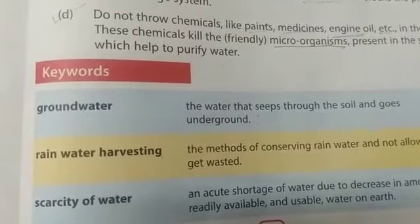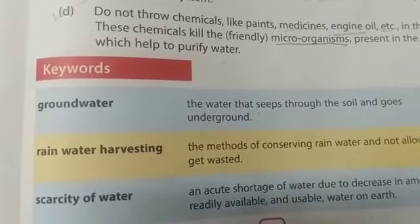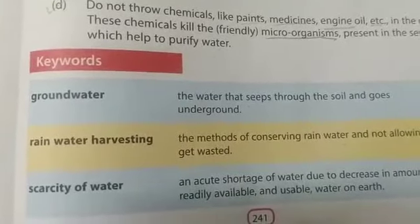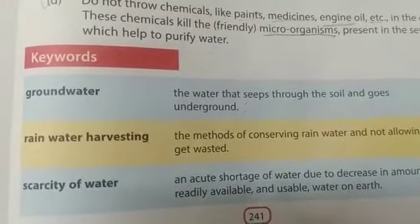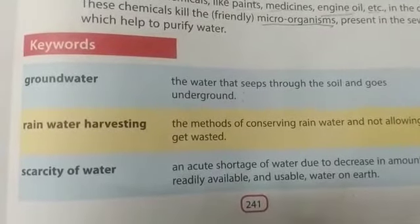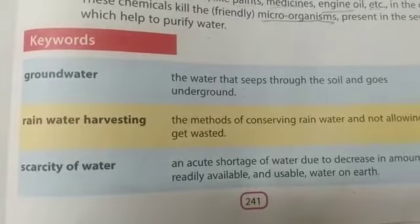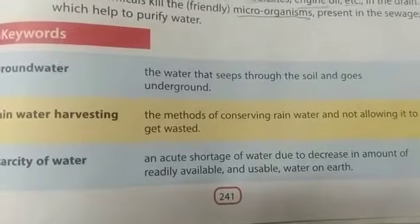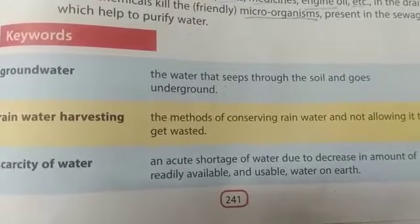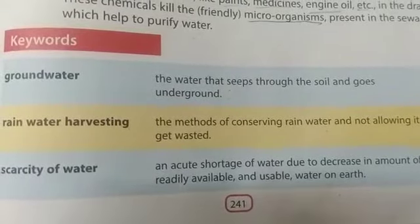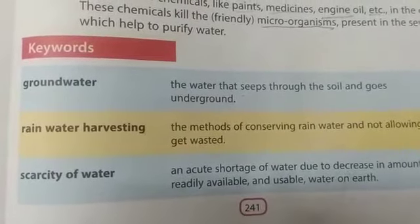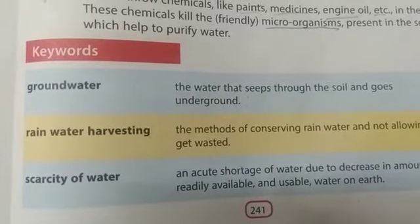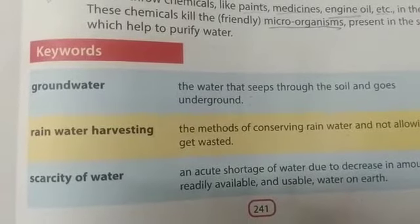After that, rain water harvesting. Rain water harvesting refers to collecting and storing rainwater. Next, scarcity of water: an acute shortage of water due to a decrease in the amount of readily available and usable water on earth. We know that 97% of water is present in seas and oceans, and only 3% of water is fresh water used for drinking.